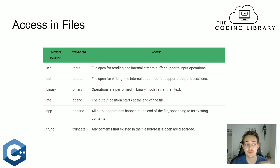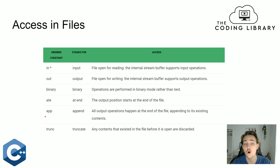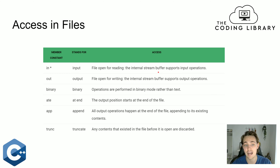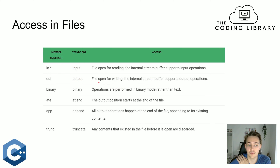When talking about file handling in C++, we have different kinds of access for the files. We have different member constants that we have to define when we're going to create or open a new file, and these tell our function what to do with that file. Some of these member constants include input and output, which are the defaults. The input member constant means the file is opened for reading — the internal stream buffer supports input operations. Output means the file is opened for writing, and the internal stream buffer supports output operations.